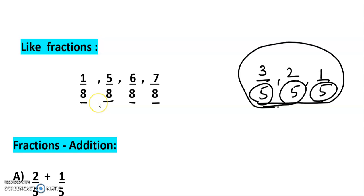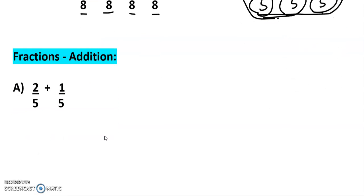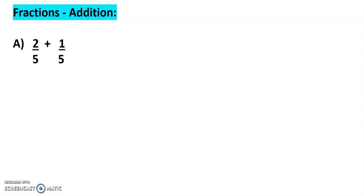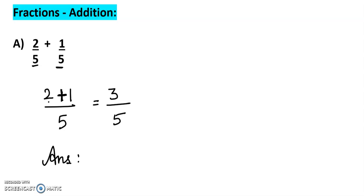Now we are going to see like fractions addition. So: 2/5 plus 1/5. The denominators are the same, so it is a like fraction. When we are adding like fractions, we should add the numerators alone, then write the common denominator. So 2 plus 1 equals 3, and the answer is 3/5.